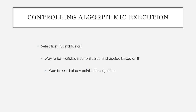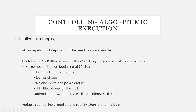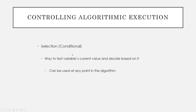We also have a concept called selection, or conditional. This is a way to test a variable's current value and decide what to do based on that value. For example, 'if X is greater than 0' is a conditional statement — if it's greater than 0, do this thing; otherwise finish. We can use conditional logic at any point in the algorithm.